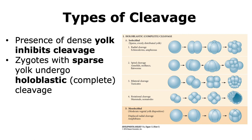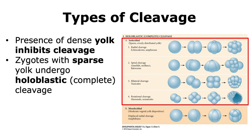The presence of yolk inhibits cleavage. Zygotes with sparse yolk undergo holoblastic cleavage, shown in the top part of the figure, and this is normally seen in isolecithal zygotes. There are four different ways cleavage can occur depending on the planes at which it happens: radial cleavage, spiral cleavage, bilateral cleavage, and rotational cleavage.